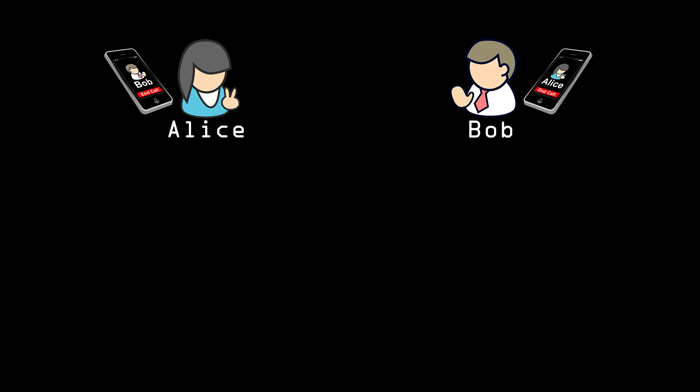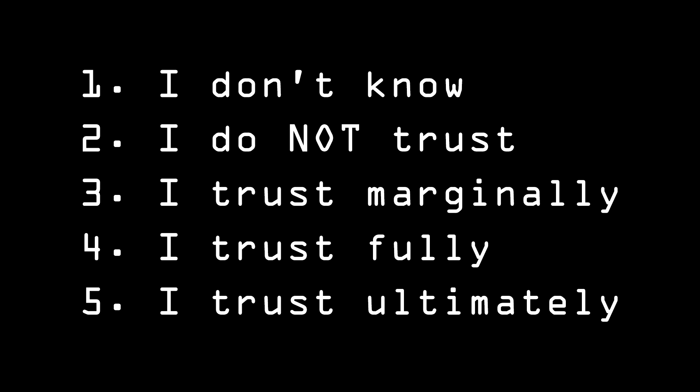Bob can sign Alice's key using his private key and give it a level of trust. There are five levels of trust in the PGP standard: 1. I don't know. 2. I do not trust. 3. I trust marginally. 4. I trust fully. 5. I trust ultimately.